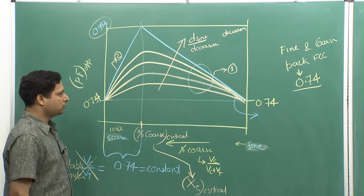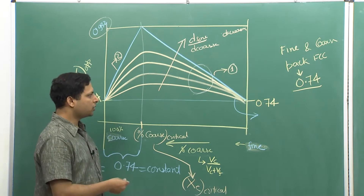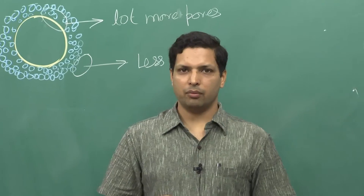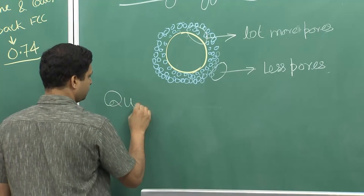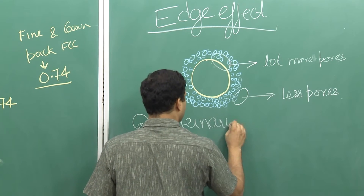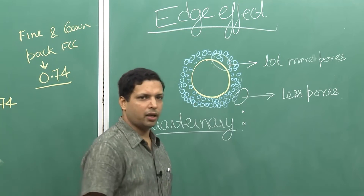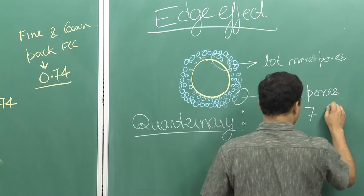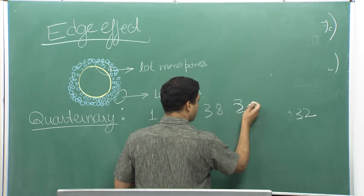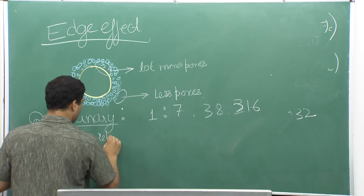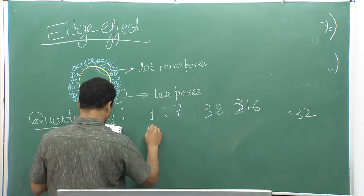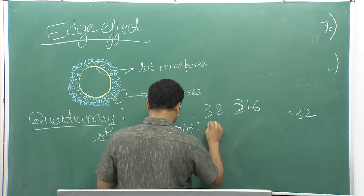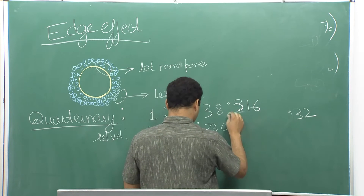This is how bimodal particle size distribution and packing looks. Moving on to something more complicated: instead of bimodal, what about a quaternary distribution? We will not go into detail, but just look qualitatively at results people have obtained for quaternary packing. With a quaternary distribution and optimal diameter ratios of approximately 1:7:38:316, people have obtained specific relative volumes for each size fraction.